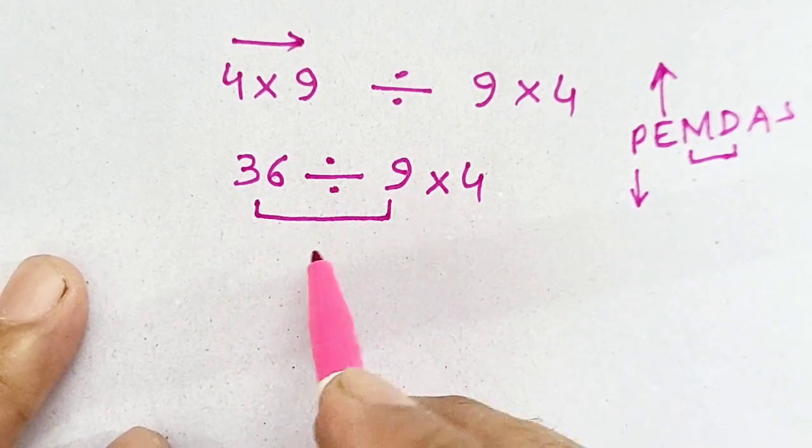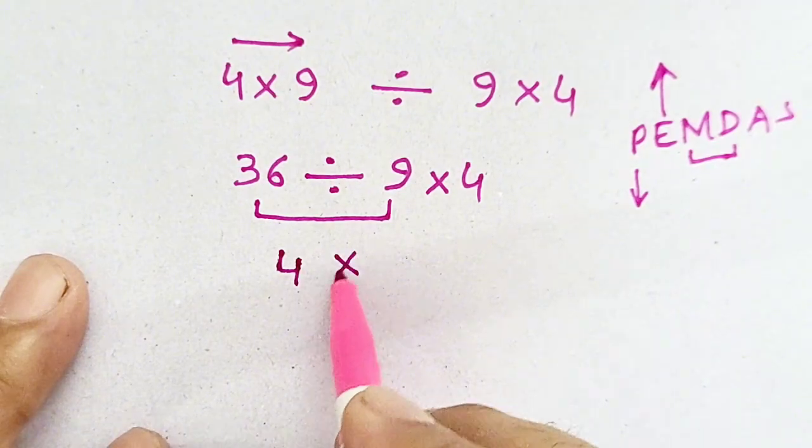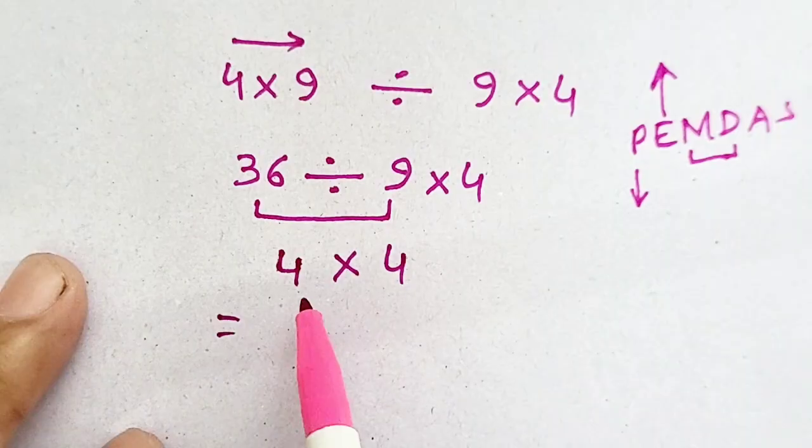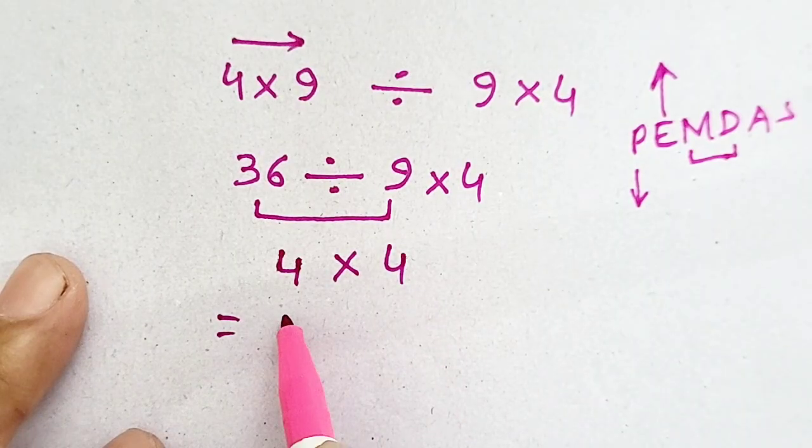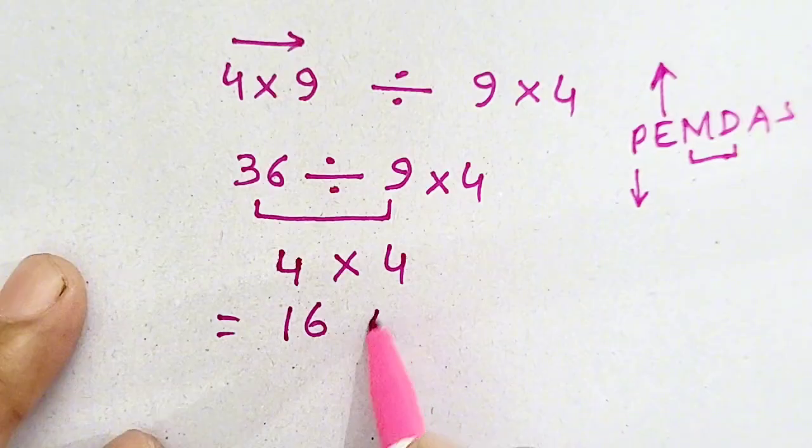So 36 divided by 9 is equal to 4. Now 4 times 4 is equal to 16, which is our answer.